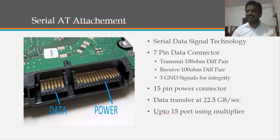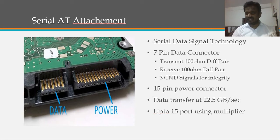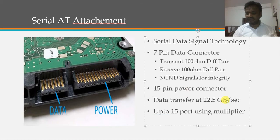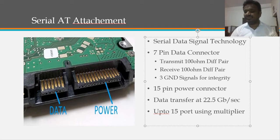That is why Serial AT Attachment performs faster than Parallel AT Attachment. SATA has a 15-pin power connector and can transfer data at 6 gigabits per second. Using a port multiplier, you can extend up to 15 ports.